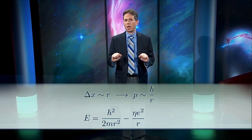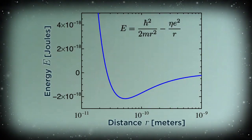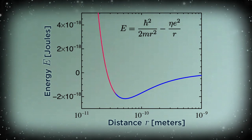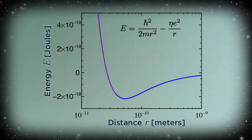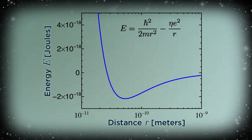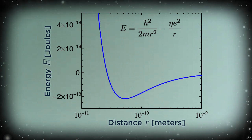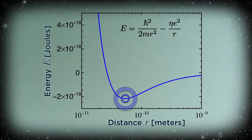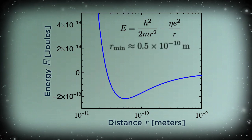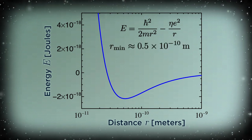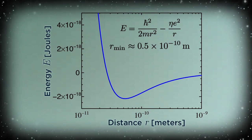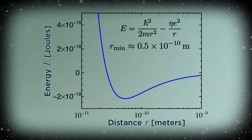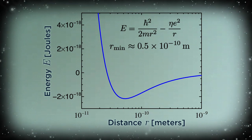For small values of r, the 1 over r squared term is dominant, causing the energy to shoot up as we approach zero. But for large values of r, the negative 1 over r term is more important. That causes the energy to rise from negative values towards zero. And in between, there's a minimum. The minimum occurs when r is about one half of 10 to the minus 10 meters. That's 0.05 nanometers, which is about equal to the observed size of a hydrogen atom. So the calculation succeeded in explaining the size of the hydrogen atom.